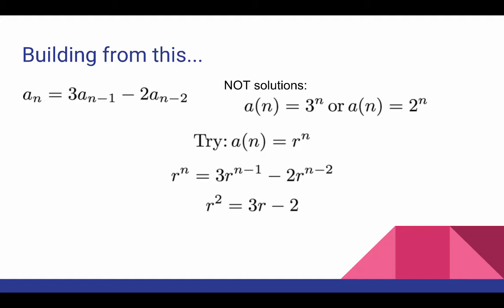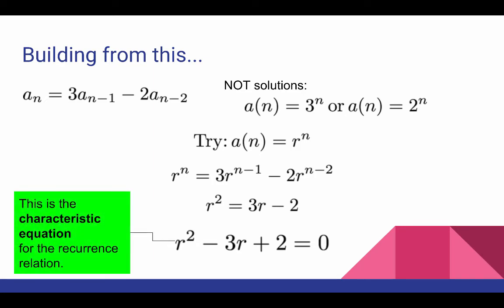If I get all the terms onto one side of the equation, I see an equation that would not be out of place in a high school algebra class. This equation which we get from inserting the initial guess of r to the nth power into the recurrence relation, and then simplifying, is called the characteristic equation for the recurrence relation.